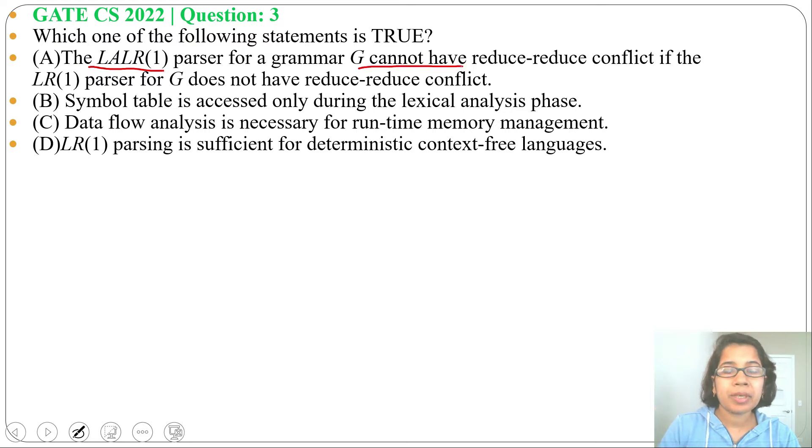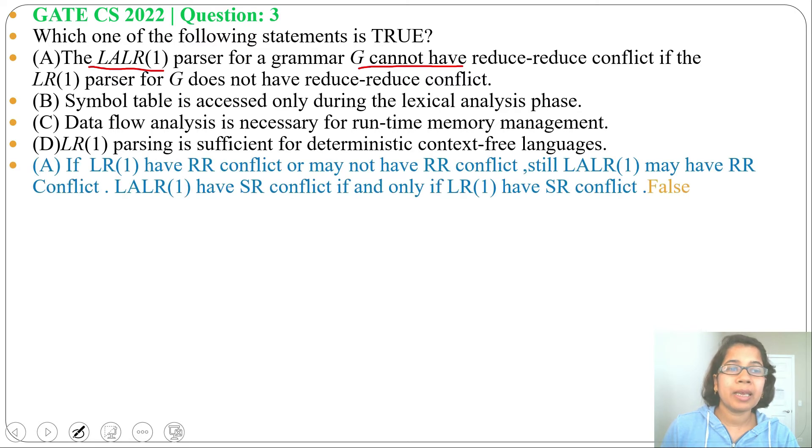It can have reduce-reduce conflict even if LR(1) doesn't. But for shift-reduce conflict: if LALR(1) has shift-reduce conflict, then LR(1) must have shift-reduce conflict. So Option A is false - there may be reduce-reduce conflict in LALR(1) even if LR(1) doesn't have it.